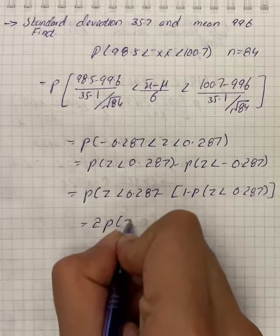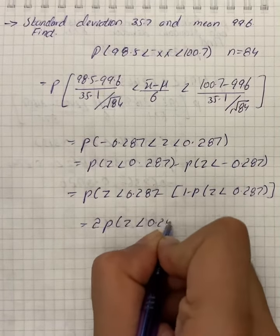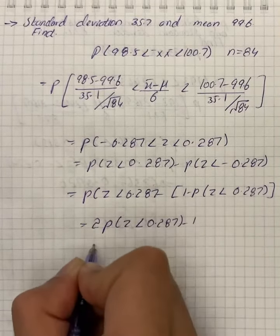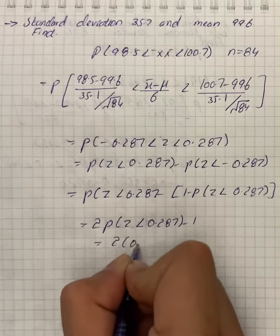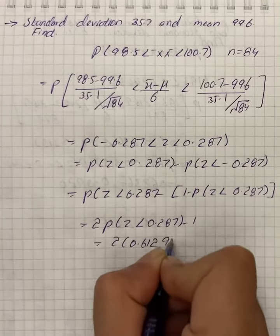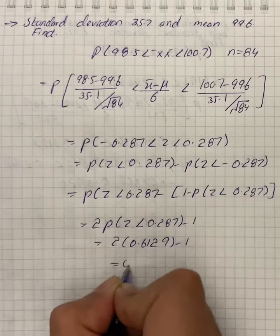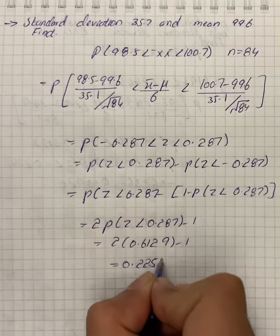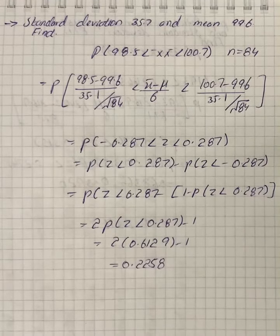So we can write 2P of z less than 0.287 minus 1, and we have 2 times 0.6129 minus 1, that turns out to be 0.2258, which is the required probability.